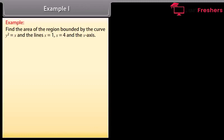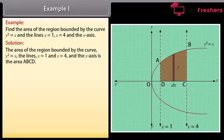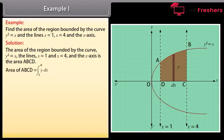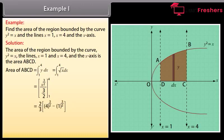Example 1: Find the area of the region bounded by the curve y² = x and the lines x = 1, x = 4, and the x-axis. Solution: The area of the region bounded by y² = x, the lines x = 1 and x = 4, and the x-axis is the area ABCD. Area of ABCD = ∫ from 1 to 4 of y dx. By solving it, we get area of ABCD = 14/3 square units.